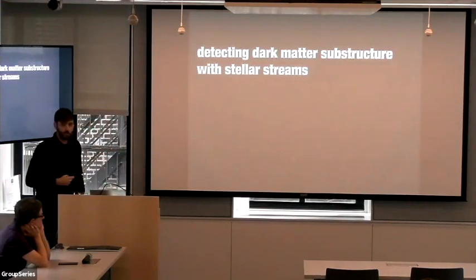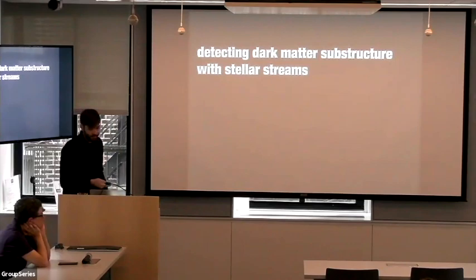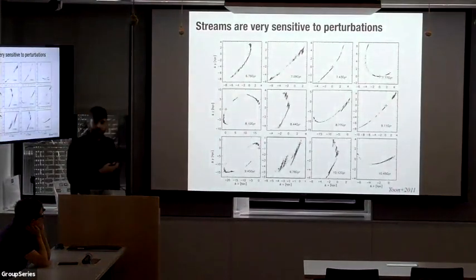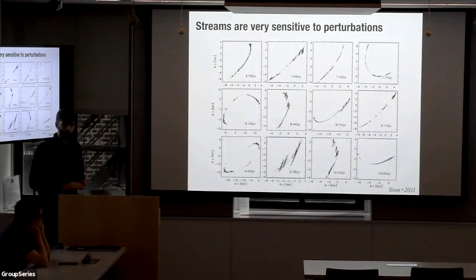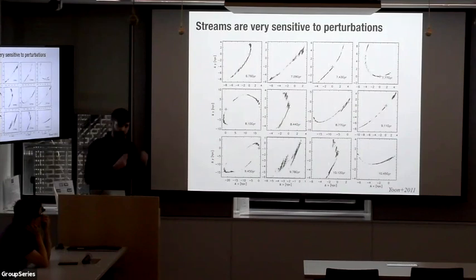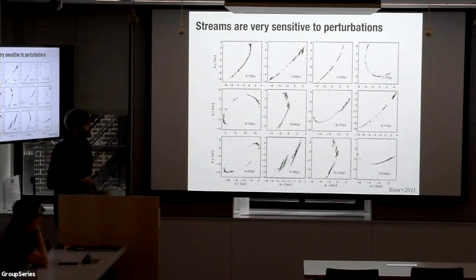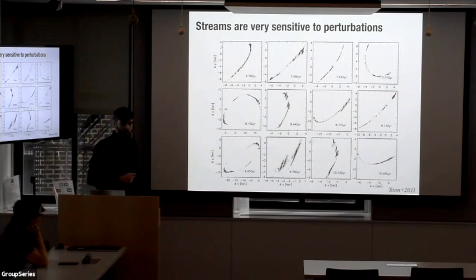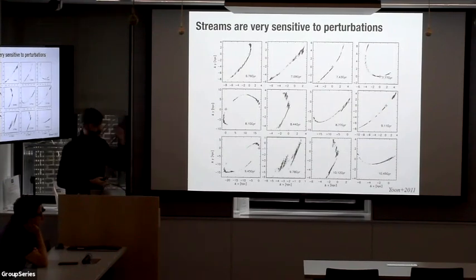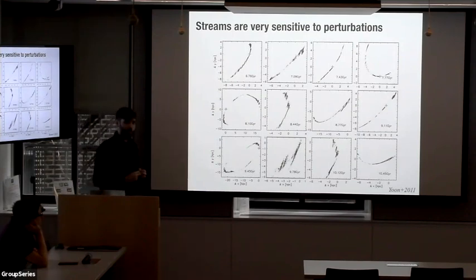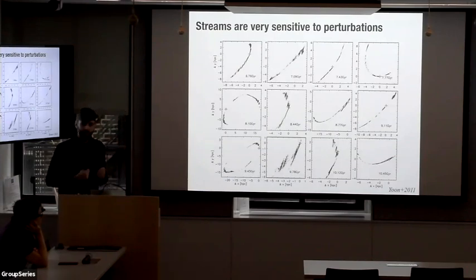That was all about the first goal — mapping the dark matter distribution globally. Now I want to briefly mention the other two. The second goal was detecting dark matter substructure using stellar streams. It was also realized pretty early on that streams give you orbital information useful for constraining the global dark matter distribution, but they're also extremely useful as tools for studying small-scale substructure — because they're very kinematically cold, with velocity dispersions typically less than a kilometer per second.